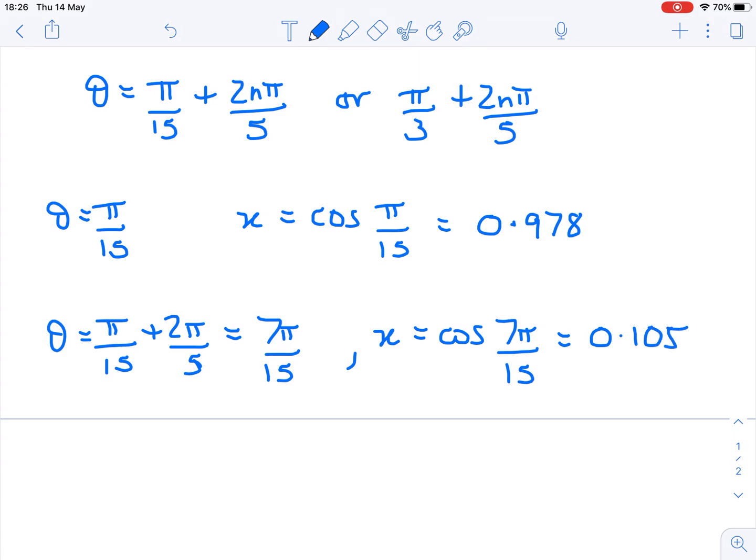I'm on a bit of a roll, I'm going to add another 2π/5. So I have π/15 plus not 2π/5, but 4π/5, giving me 13π/15. And my x value, which corresponds to that θ value, cosine of 13π/15, I get negative 0.914.